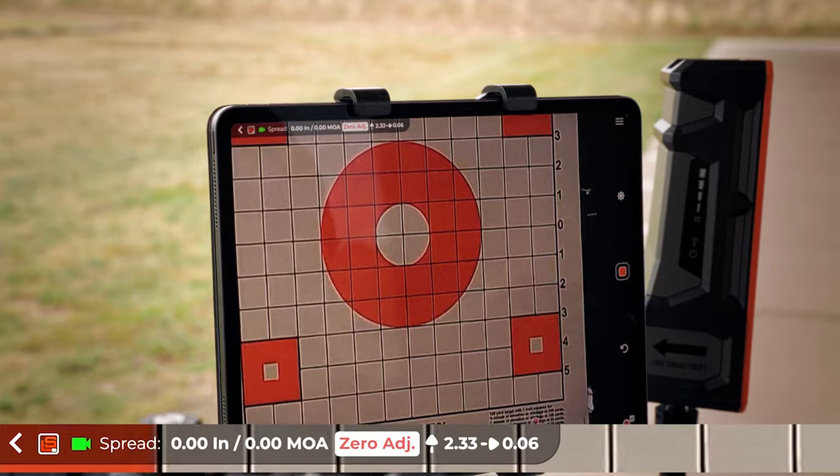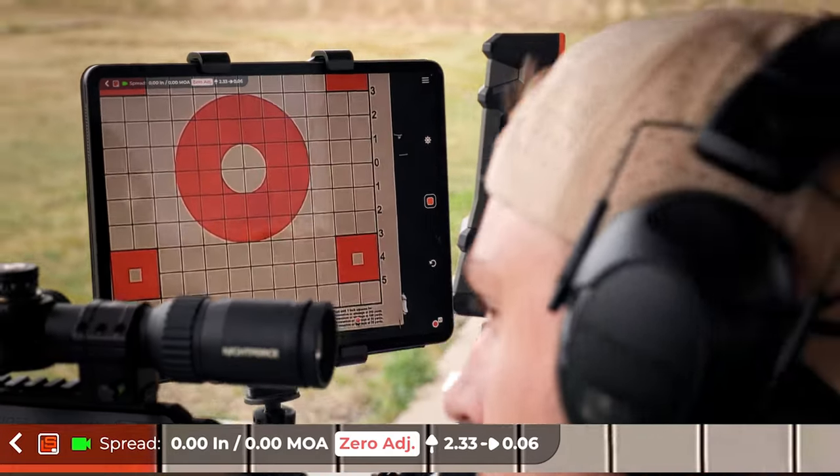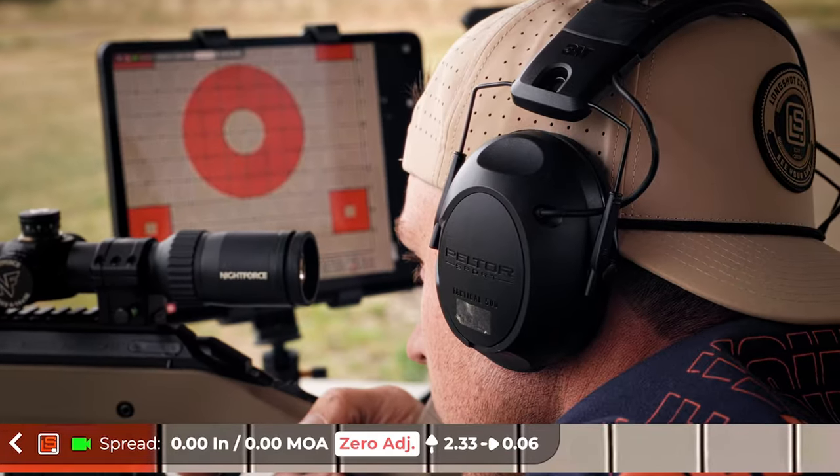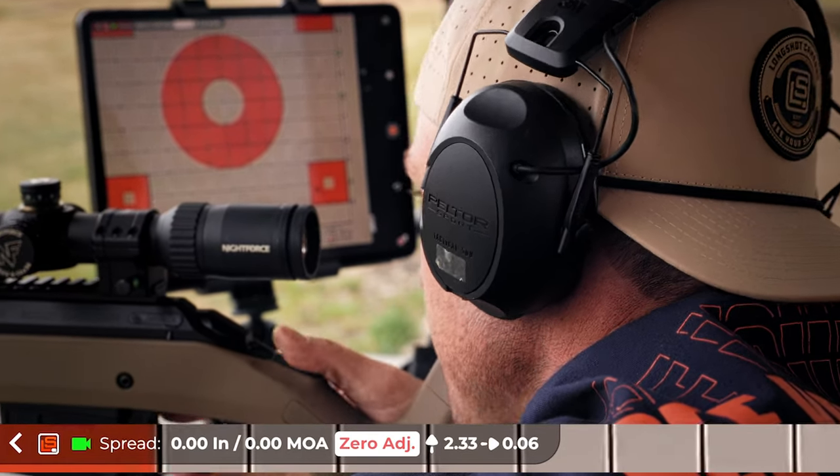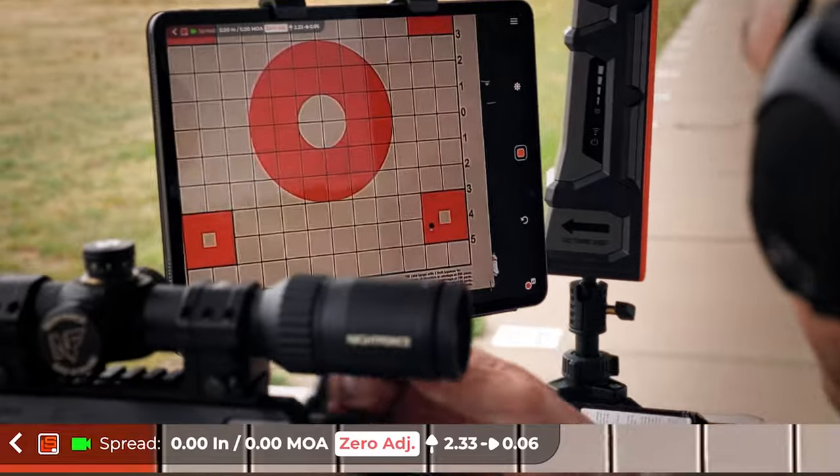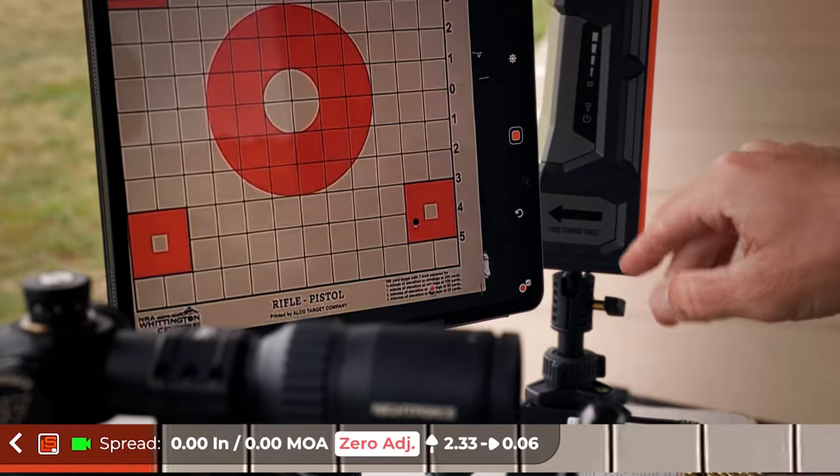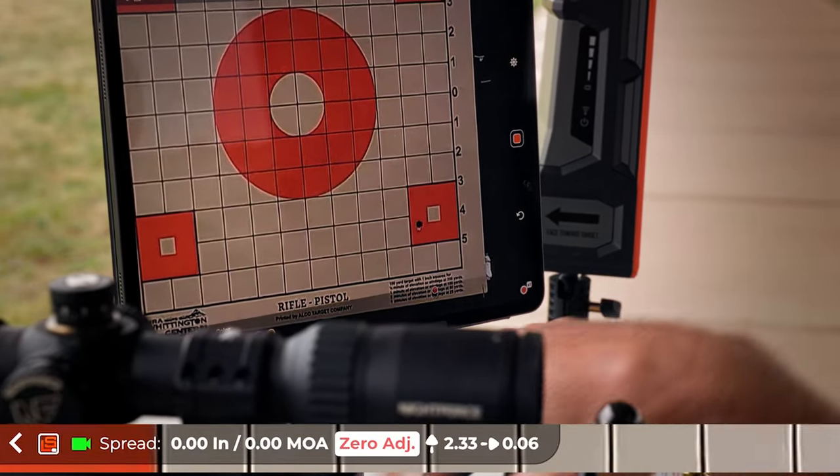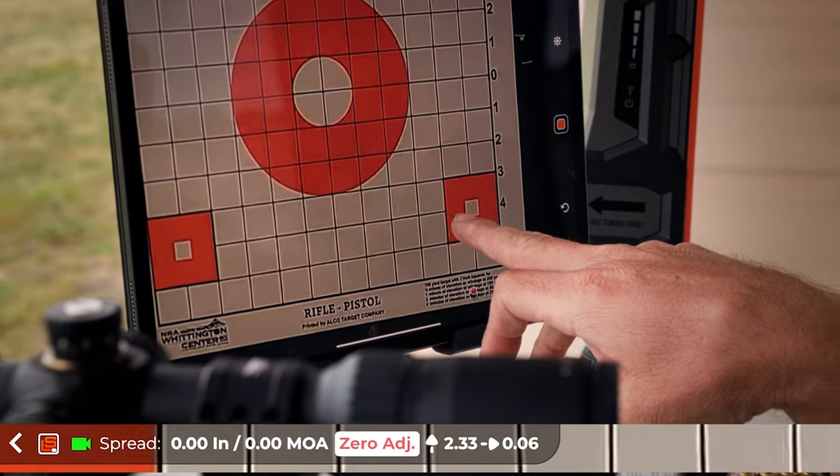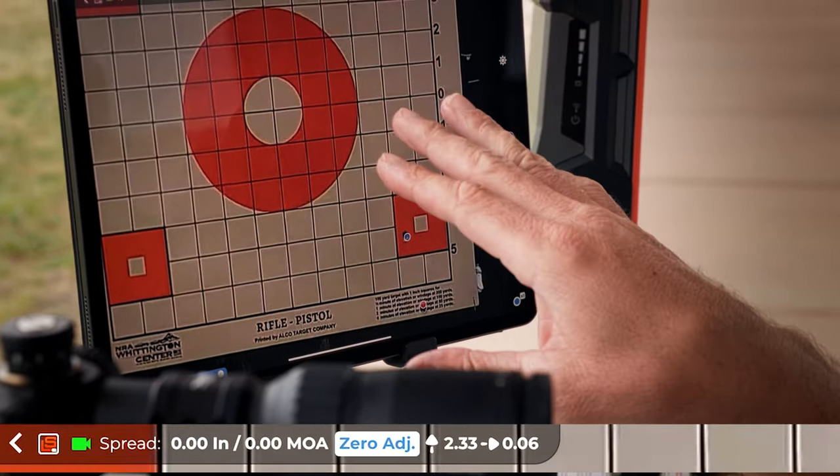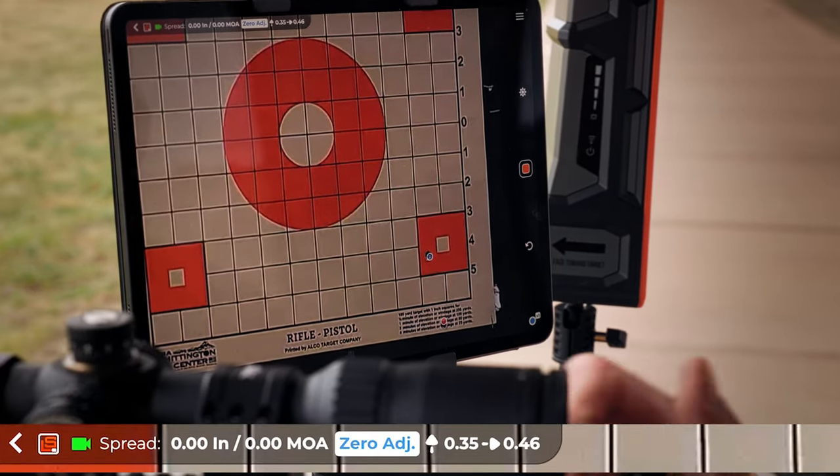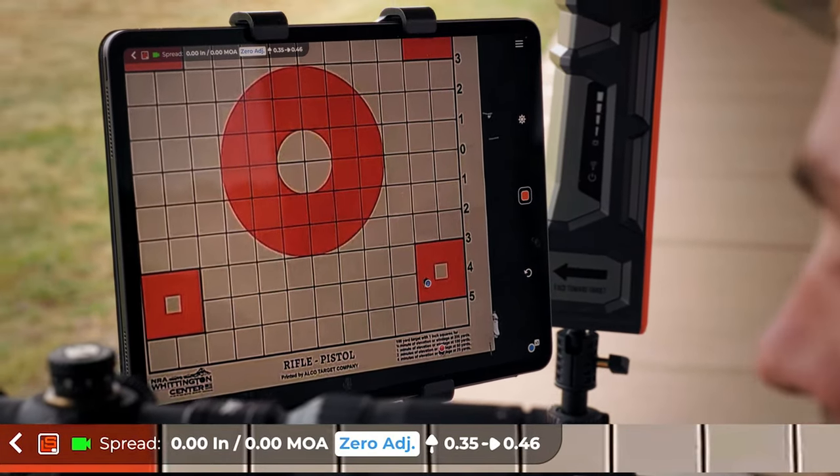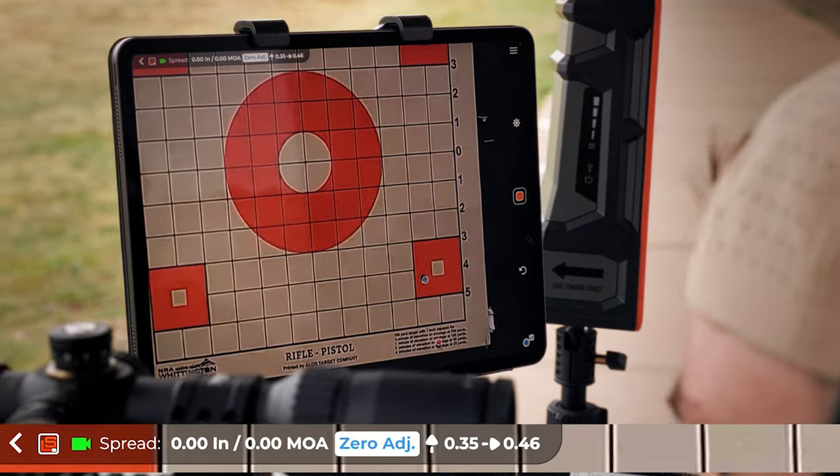We're going to send another one, let's see if those adjustments were good. Now that's pretty darn close, so what we can do is let's change colors. Now when we click that group, it's going to give us more real-time data. Let's just go up a quarter minute, let's send another one, see if our wind kicked up a little bit.